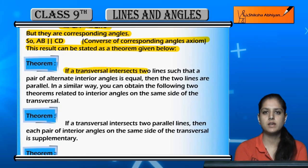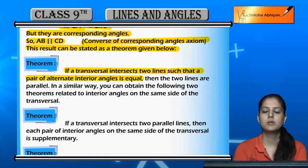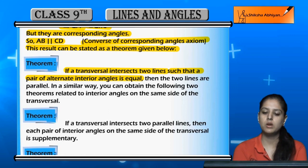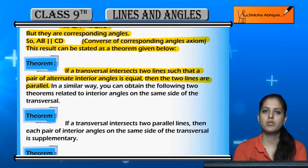Theorem: If a transversal intersects two lines such that a pair of alternate interior angles is equal, then the two lines are parallel. So these two lines will be parallel.